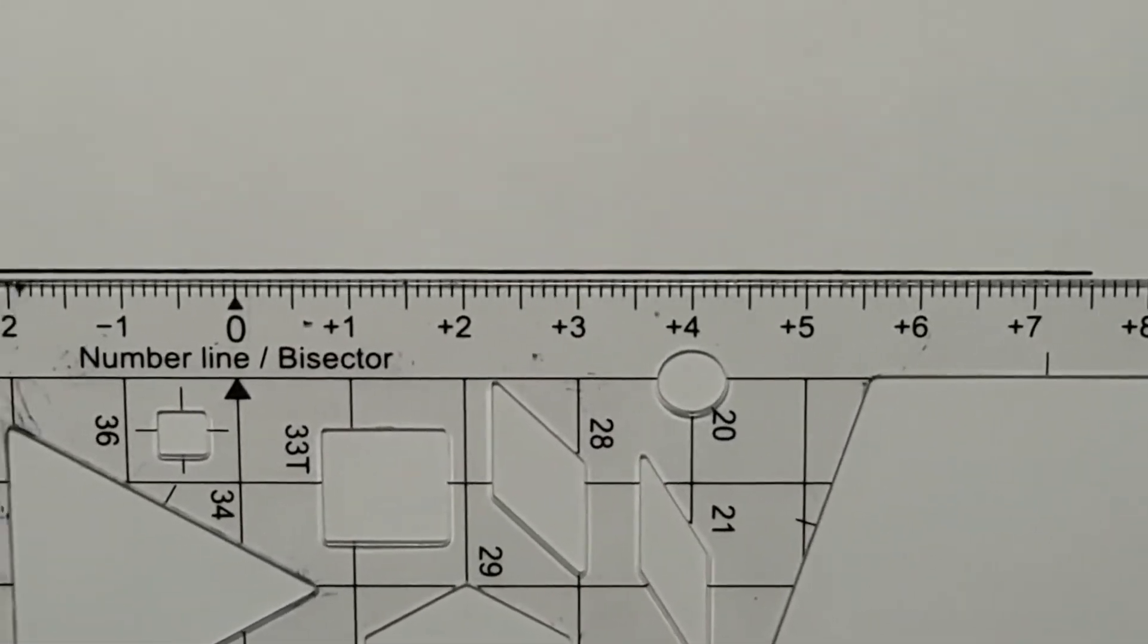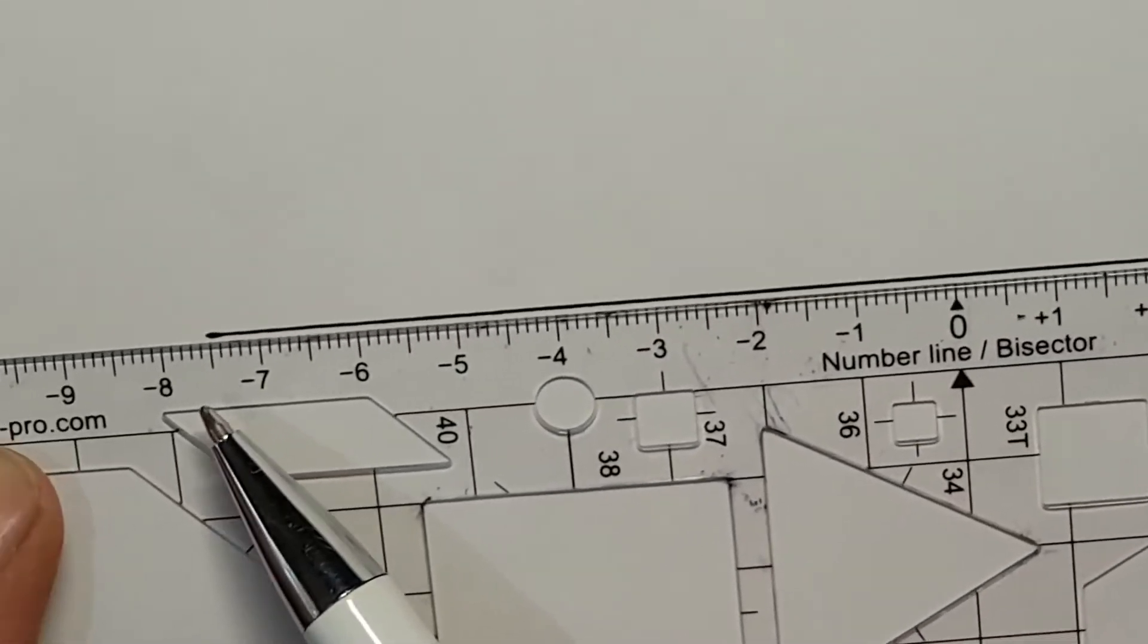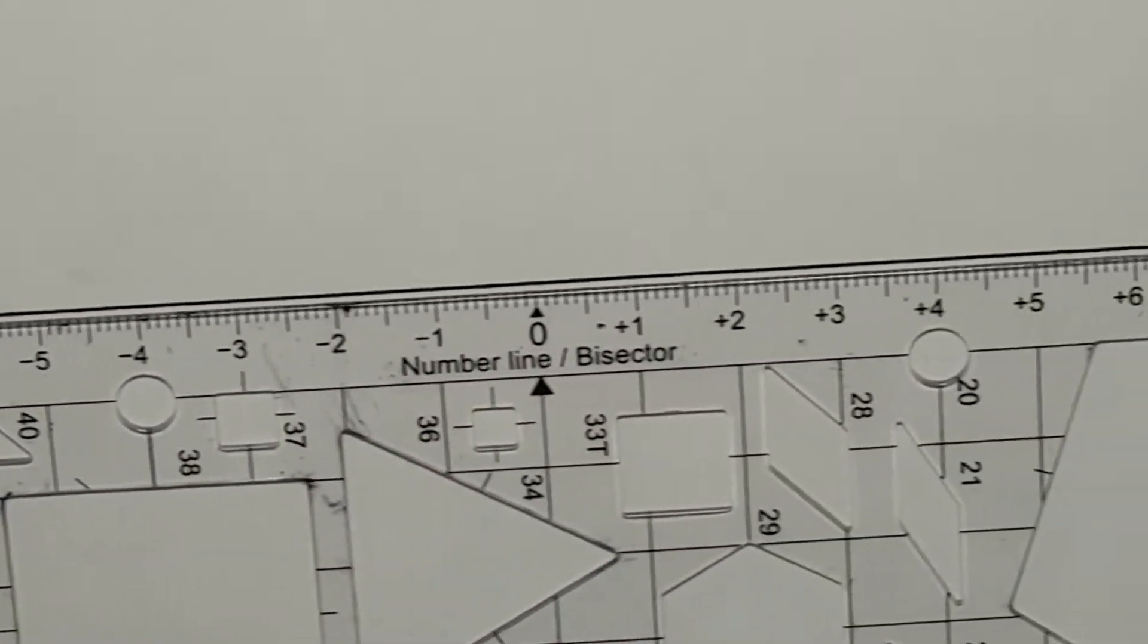So if I move it along, eventually I can see that I can get that by negative seven point five at the left and seven point five on the right.